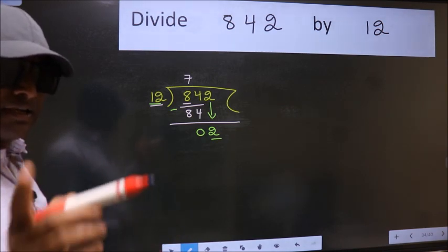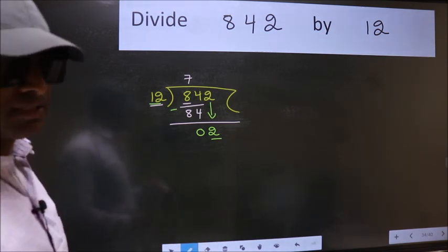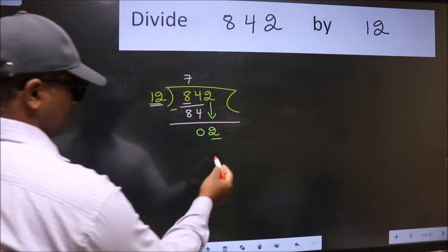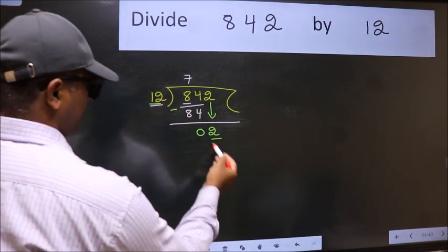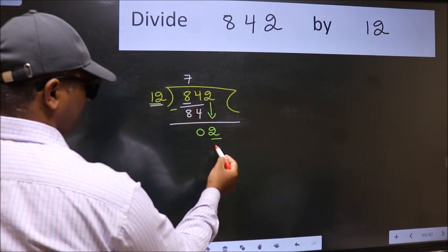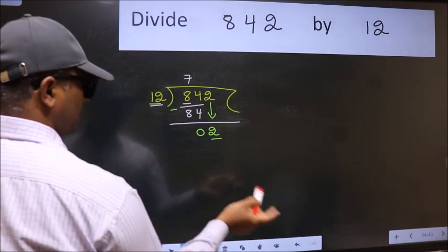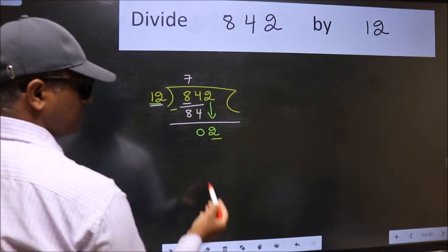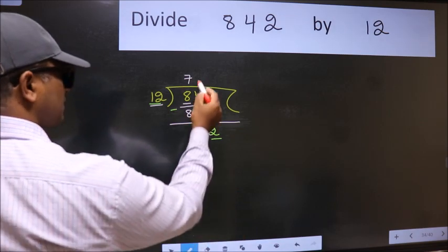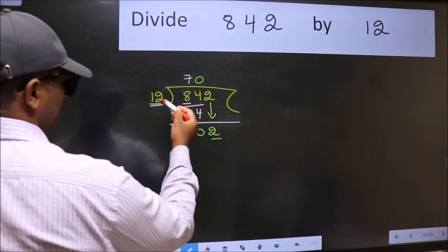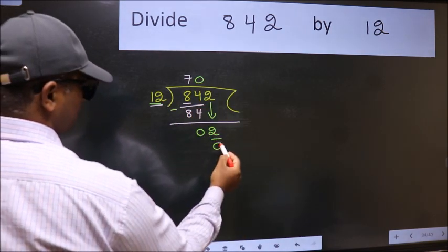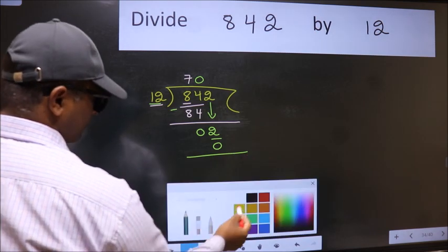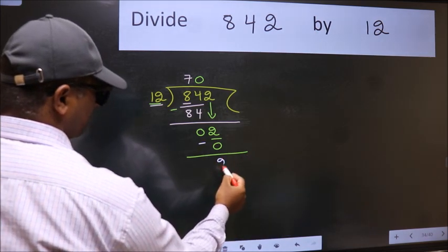Instead of that, what we should think of doing is which number should we take here? If I take 1, we will get 12. But 12 is larger than 2. So, what we do is we take 0 here. So, 12 into 0, 0. Now, we subtract. We get 2.